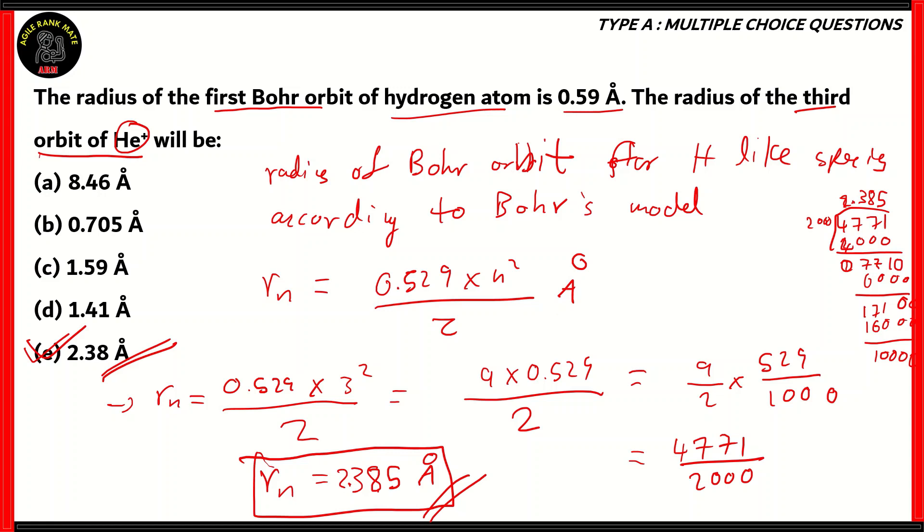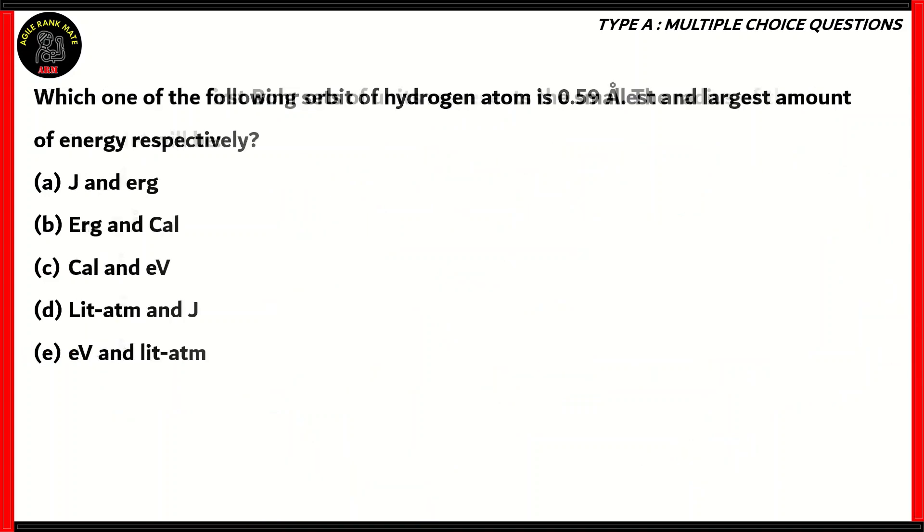Let's move on to the final question for today. We have various units given here. Which one of the following sets of units represents the smallest and the largest amount of energy, respectively? Is it joules and erg, erg and calories, calories and electron volts, liter atoms and joules, or electron volts and liter atoms?